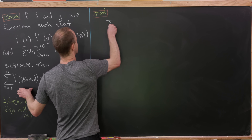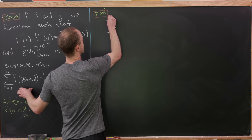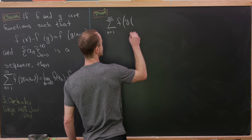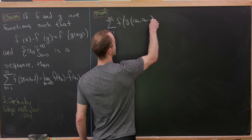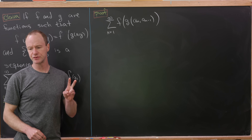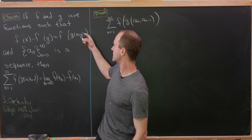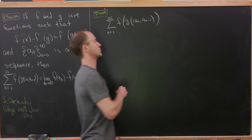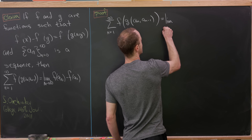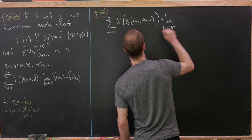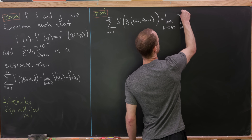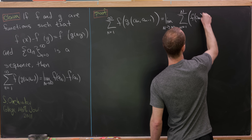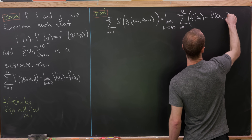Let's sketch out a proof. Starting with the left-hand side, we have that sum as n goes from 1 to infinity of f evaluated at g evaluated at a_n, a_{n-1}. I'm going to do two things at once: apply the functional identity and rewrite this as a limit of partial sums. That gives us the limit as capital N goes to infinity of the sum as n goes from 1 to capital N of f of a_n minus f of a_{n-1}.